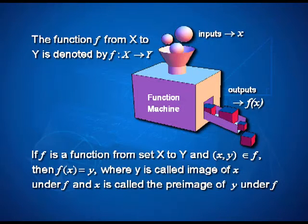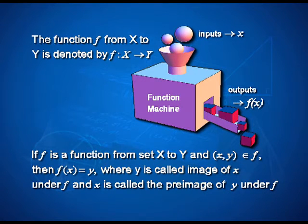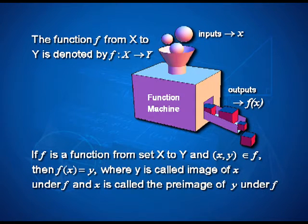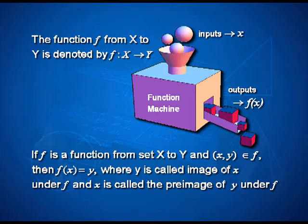So if f is a function from set X to set Y and (x, y) belongs to f, then we also write y to be the same as f of x — read as 'f of x' — where y is called the image of x under f, and x is called the preimage of y under f. Symbolically, we represent this function from set X to set Y as f : X → Y. So f is a function from X to Y. Remember: x is the input, f(x) is the output, y equals f(x), y is the image, x is the preimage.